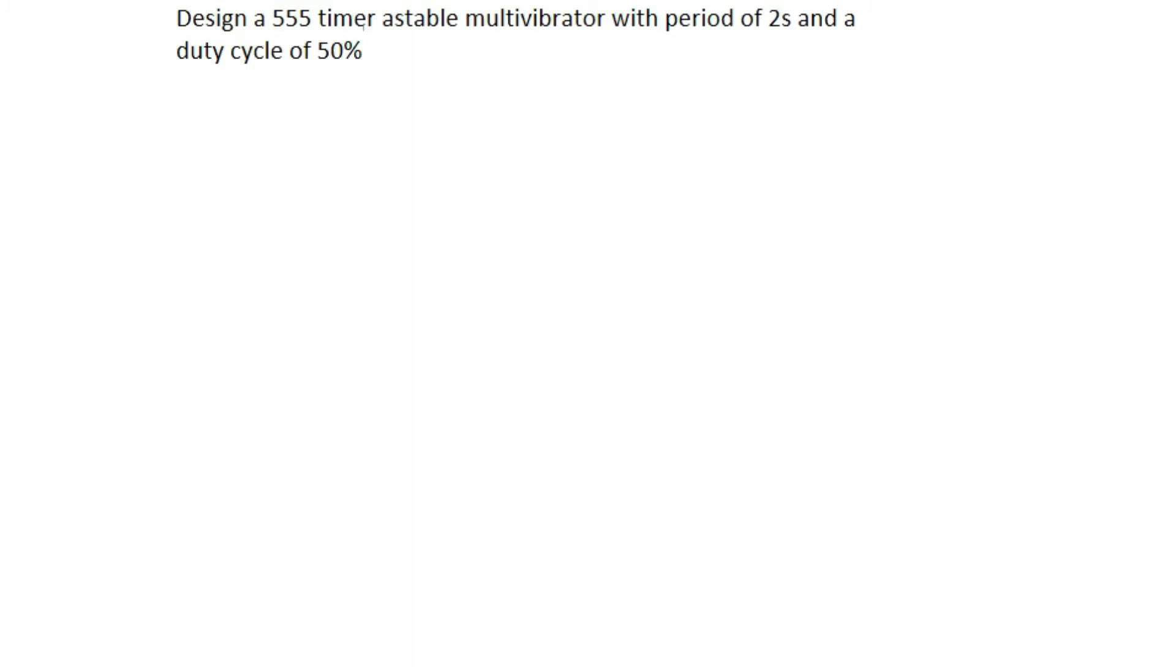I have a question on electronics that says design a 555 timer astable multivibrator with period of 2 seconds and a duty cycle of 50%. Now for this, we're given our period T to be 2 seconds and we're given our duty cycle to be 50%.